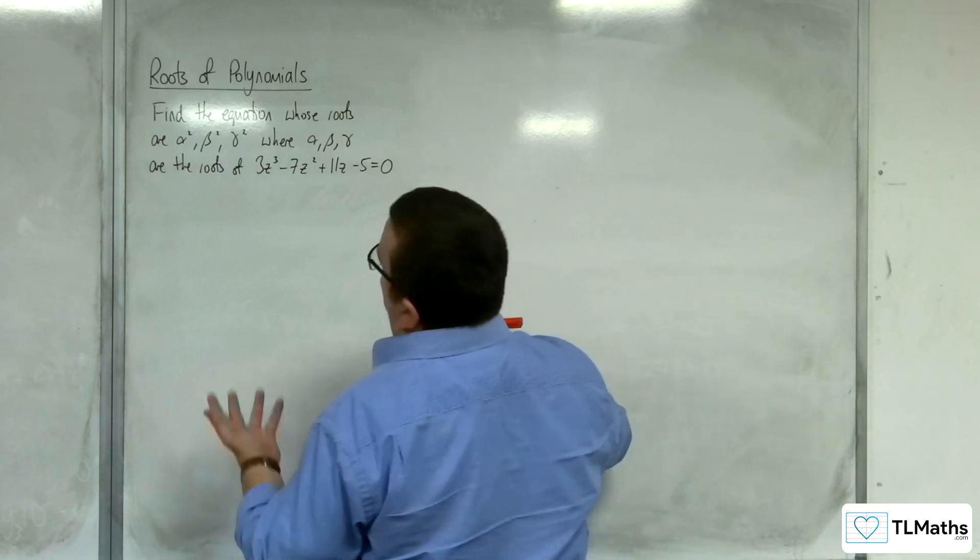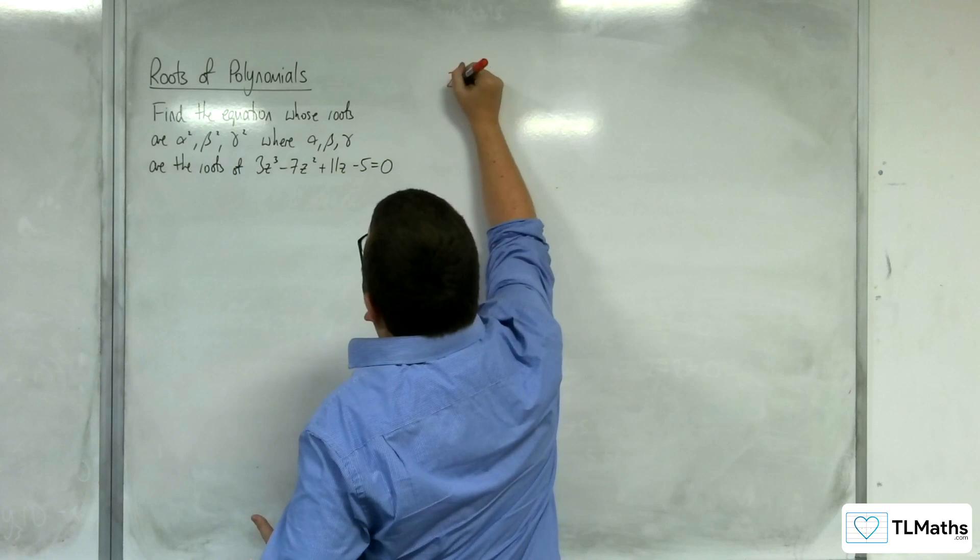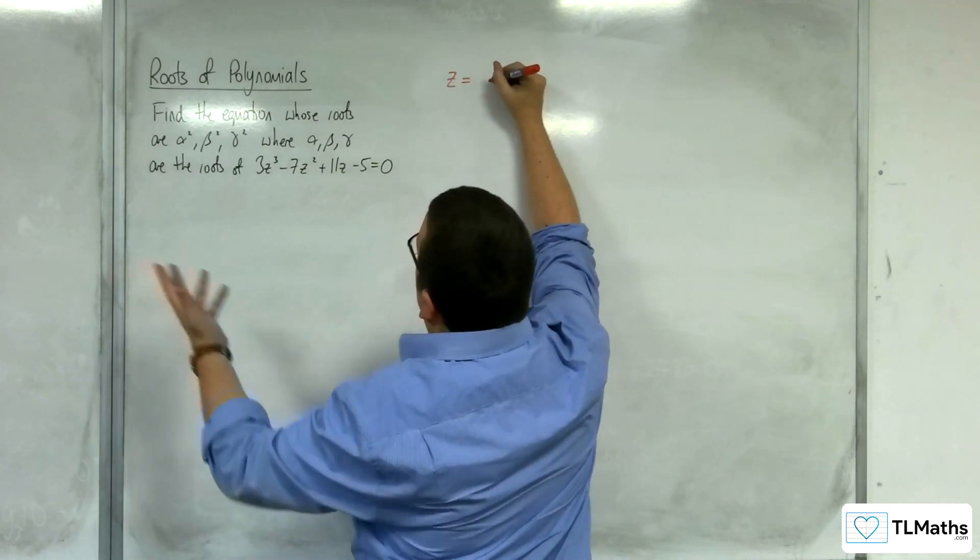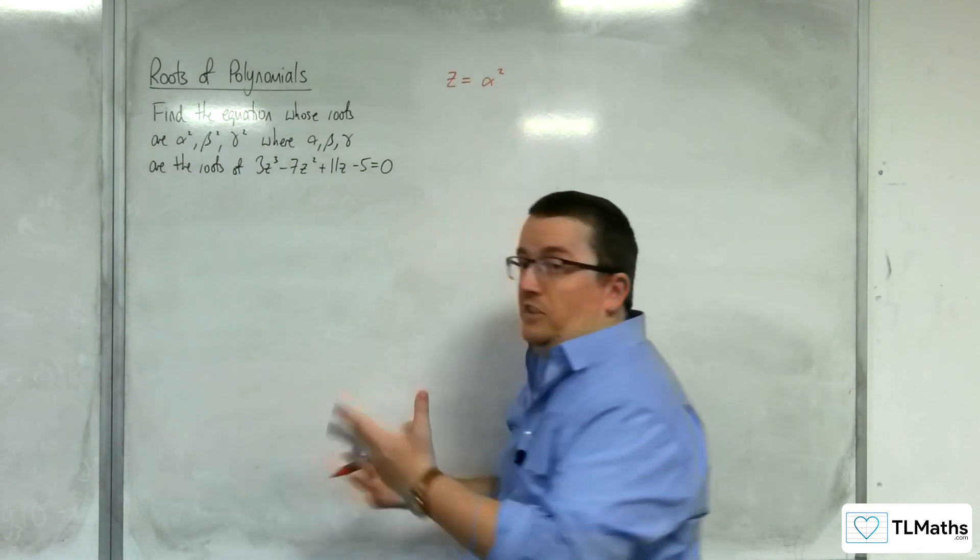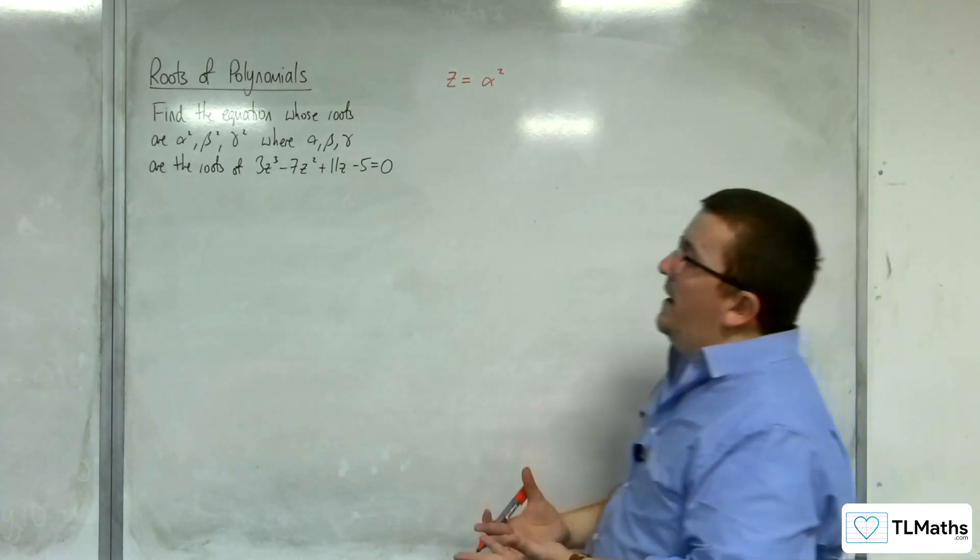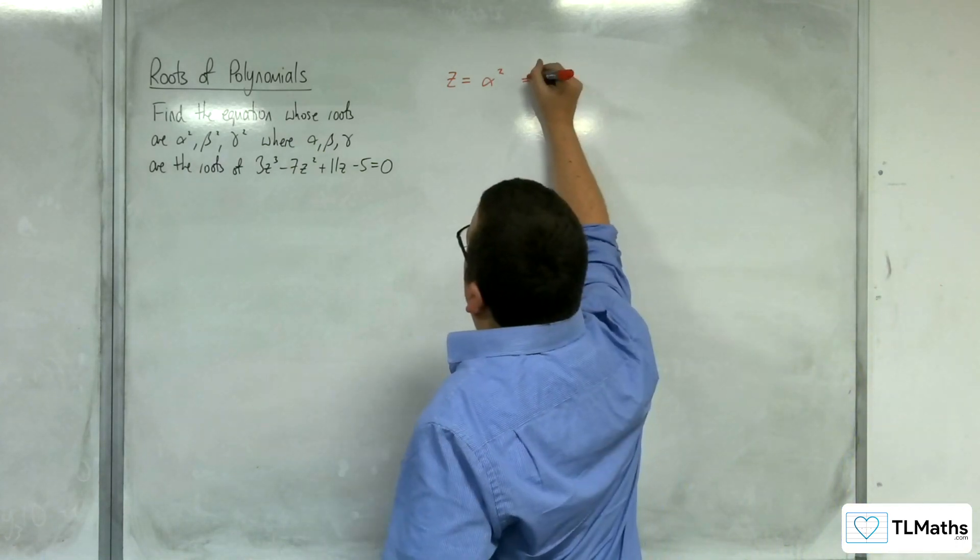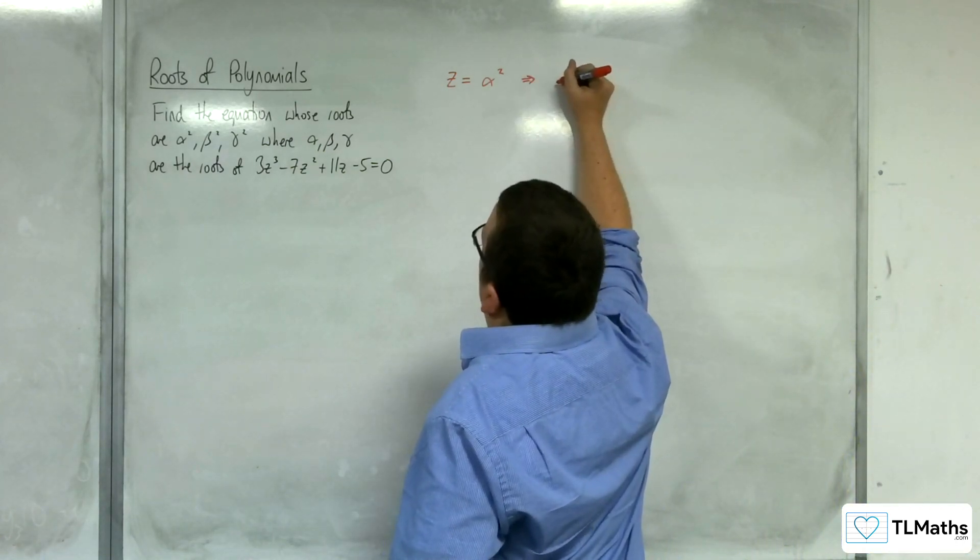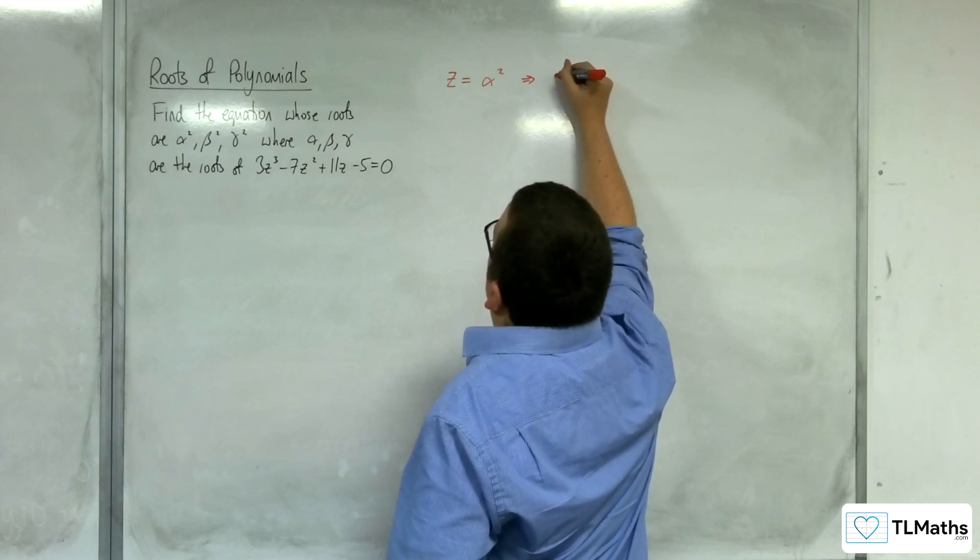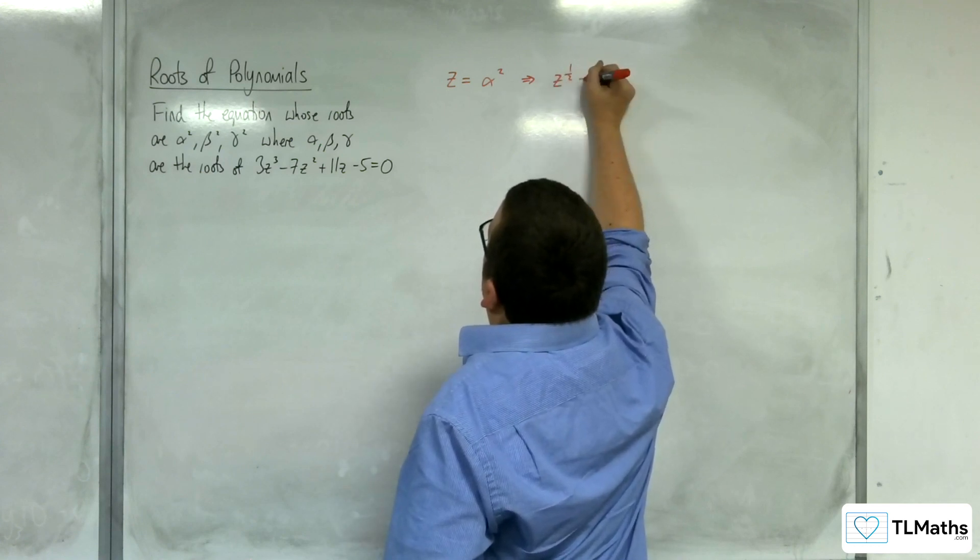The idea then would be that z as a root now needs to have alpha squared. So alpha squared needs to be one of the roots. Then I could square root both sides and replace z with z to the half.